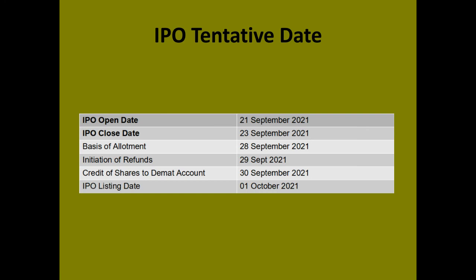Now let's have a look at the IPO tentative dates. The IPO open date is 21st September 2021 and the closing date is 23rd September 2021. The basis of allotment is 28th September 2021, initiation of refunds 29th September 2021. Credit of shares to demat account will be done on 30th September 2021 and the IPO listing date is 1st October 2021.